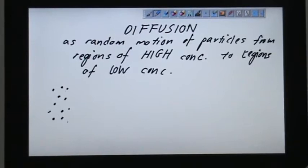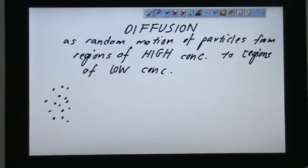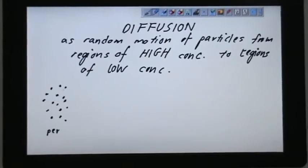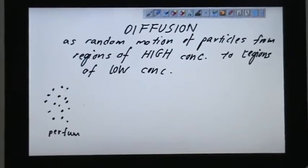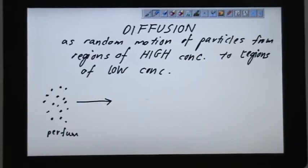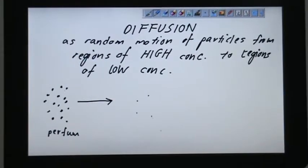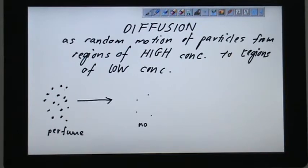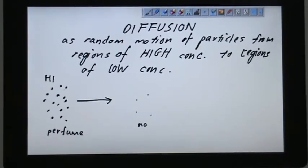Let's say this is perfume gas. So it actually travels to regions of low concentration or could be none. There is no perfume here. So maybe this is just air molecules. So all these perfume molecules will travel from regions of high concentration to regions of low concentration.